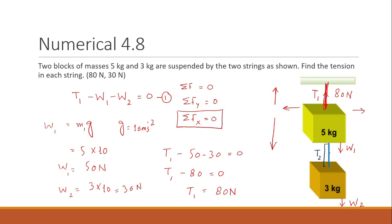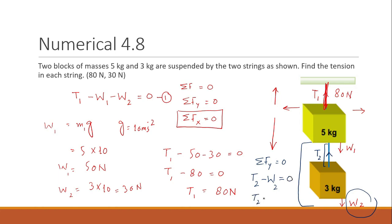To calculate the tension T2 in the lower string: T2 acts in the upward direction against only the weight W2. Applying equilibrium at this portion, the sum of Fy equals zero, so T2 minus W2 equals zero. Since W2 equals 30 newtons, T2 equals 30 newtons.